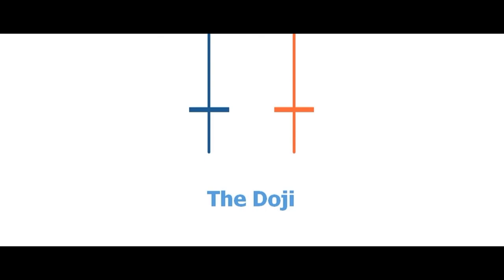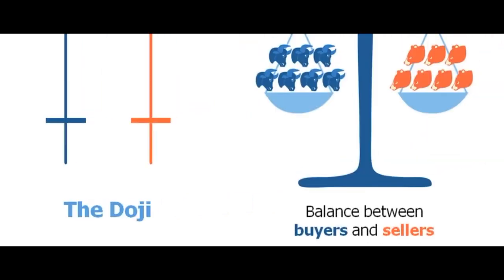The longer the wicks are after the candle has formed, the more dramatic the change in sentiment was whilst the candle was being formed. When there is an equal balance between the buyers and the sellers, this is known as a doji. The doji is characterized by a very small body relative to the wicks. A very small body shows the equal balance between the bulls and the bears. Whenever the bulls managed to push the price up, the bears entered to push it back down, and vice versa. Because the balance shifted neither in favor of the bulls nor the bears, the candle formed as a small body with long wicks. This is a doji - whenever it appears, it means there is indecision in the market.